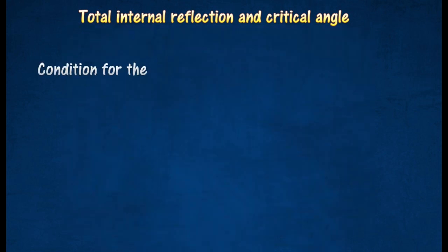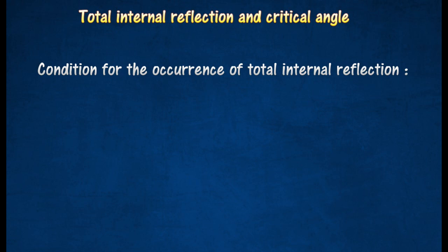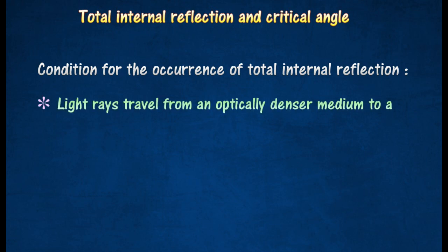The two conditions for the occurrence of total internal reflection are: The light rays travel from an optically denser medium to a less dense medium, and the angle of incidence is greater than the critical angle.